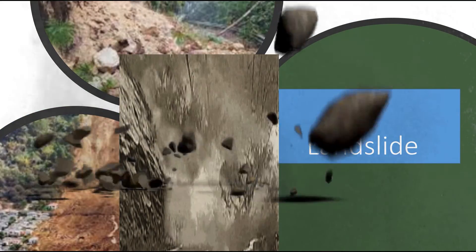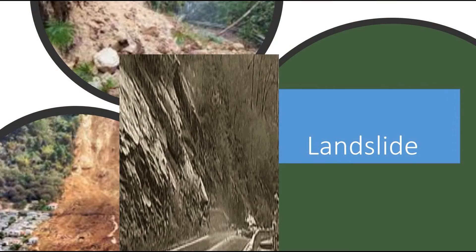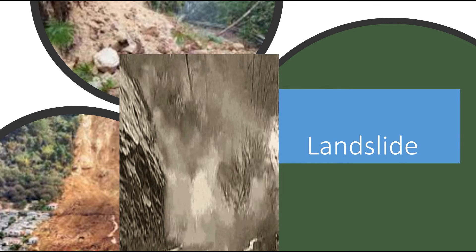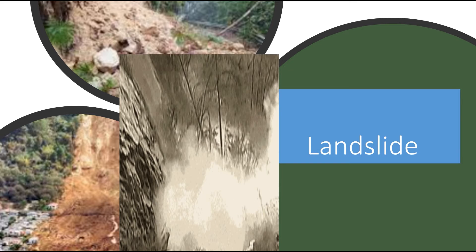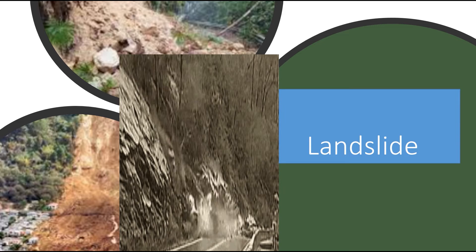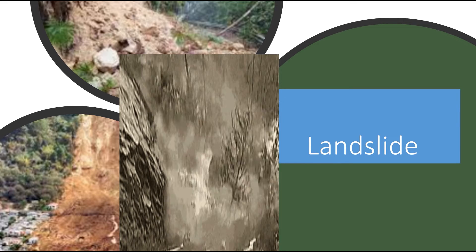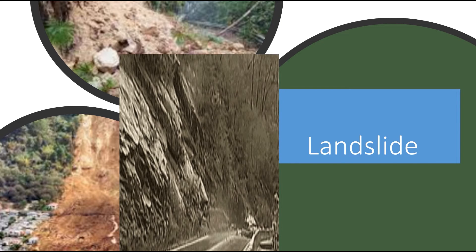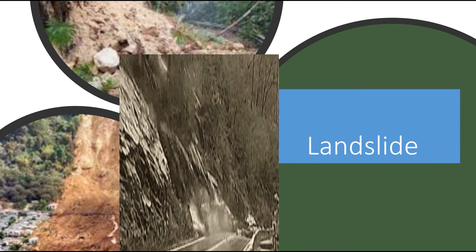A landslide is the sliding down of rocks and soils in a large amount down a slope. Landslides usually occur on steep slopes that are exposed to erosion, weathering and rainwater. A landslide is caused by gravitational force acting on a steep slope. When the gravitational force exceeds the forces that hold the soil together, the soil moves downhill.